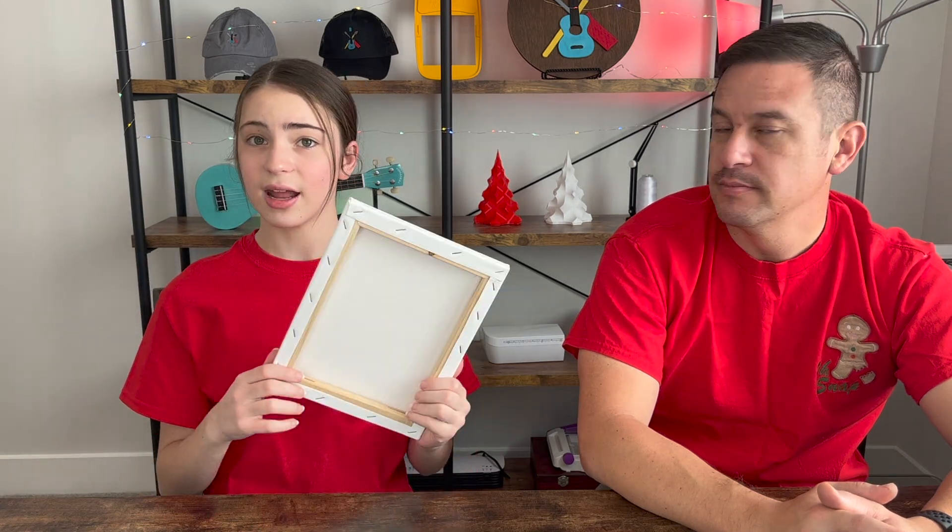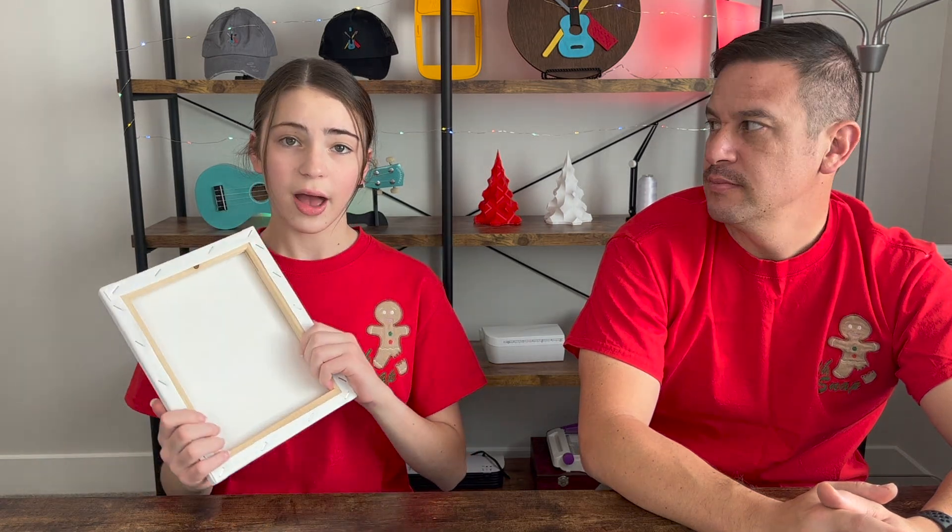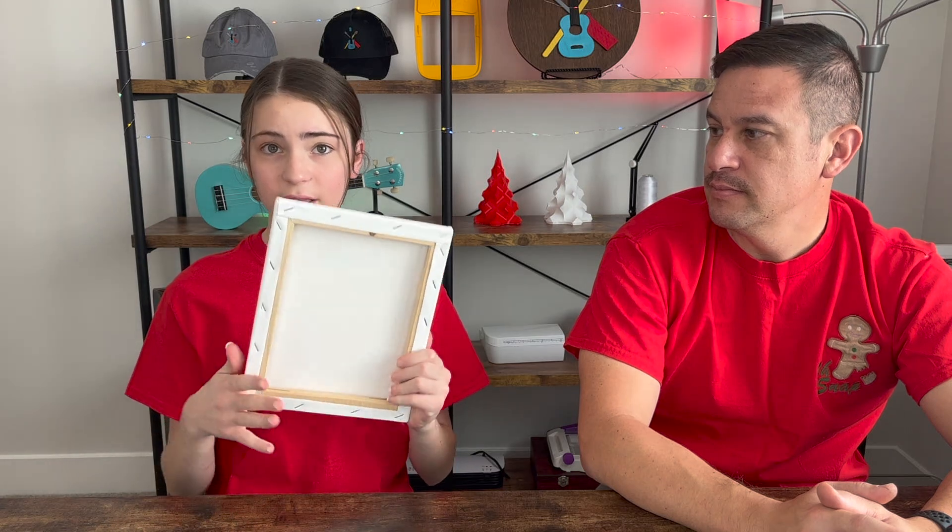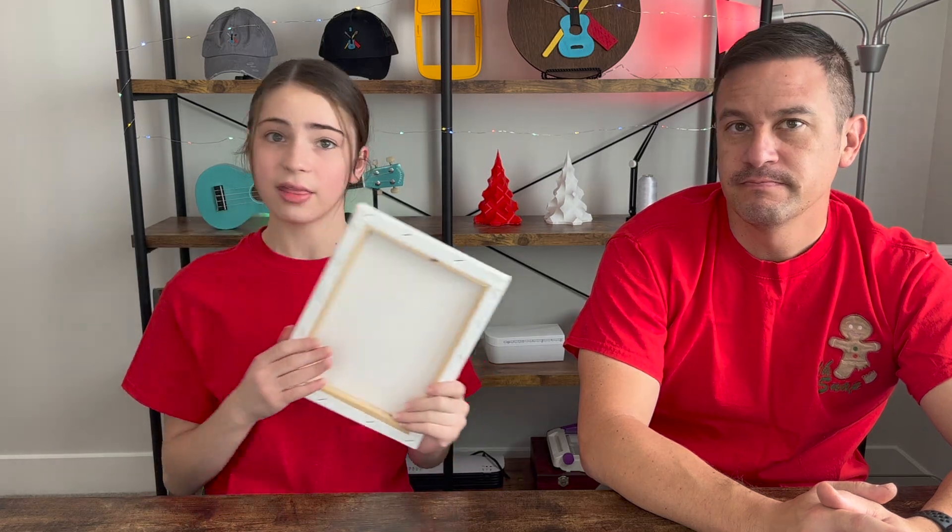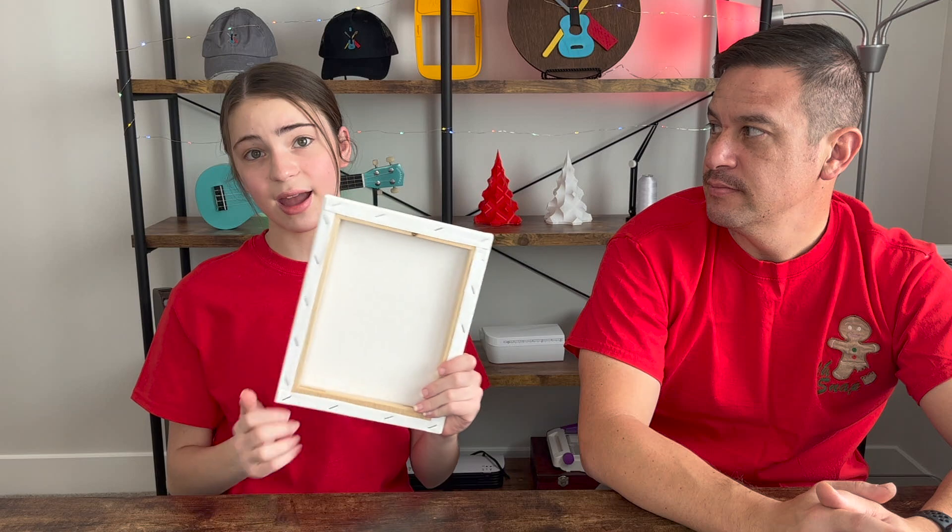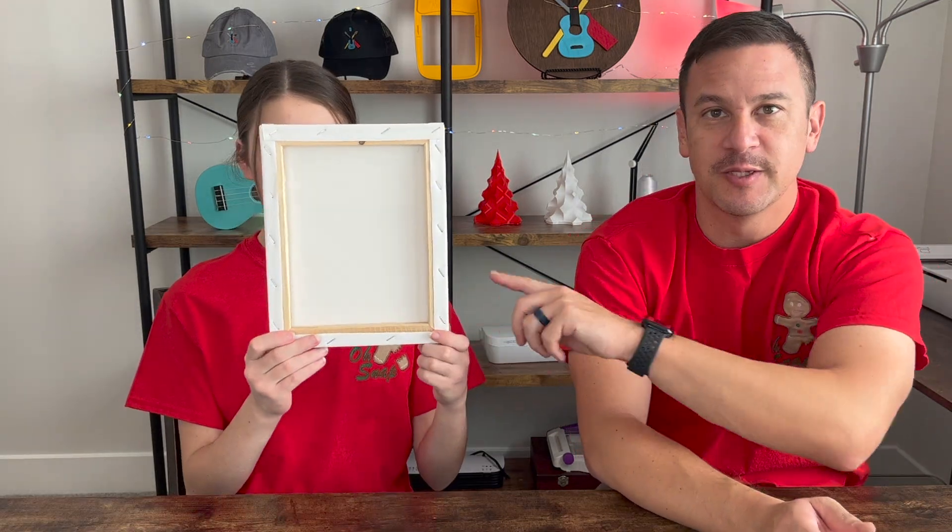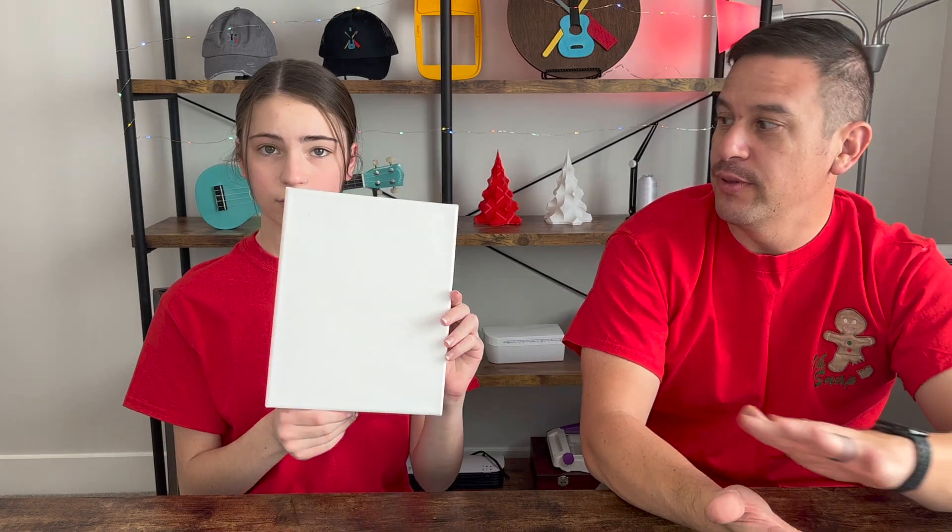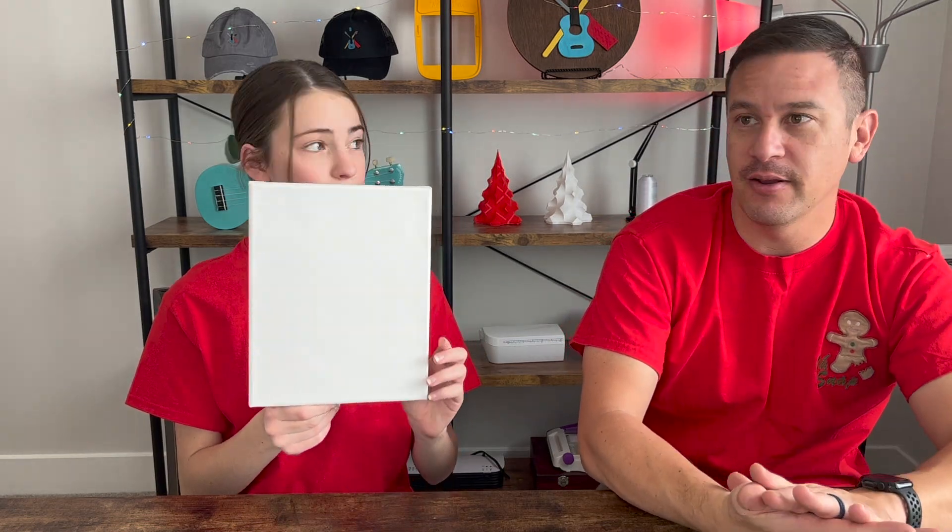So what we're going to be doing with this is we're going to make a design in Inkscape and then we'll show you how to digitize it in Silhouette to be useful for this, and then we're going to put the design on the canvas. Yeah, there's going to be some disassembly involved in taking this canvas off of the frame and reapplying our design and putting it back onto the frame.